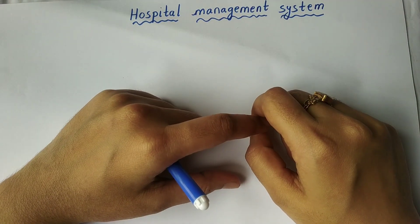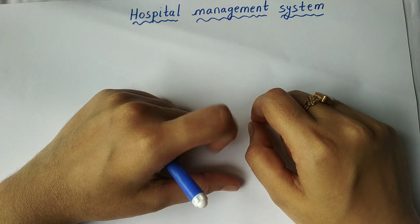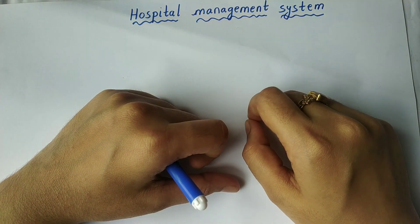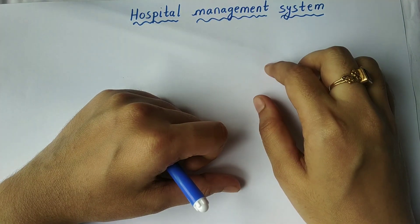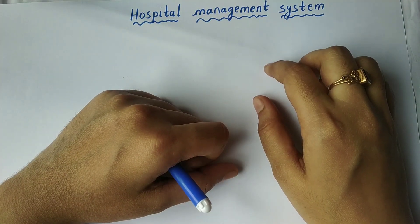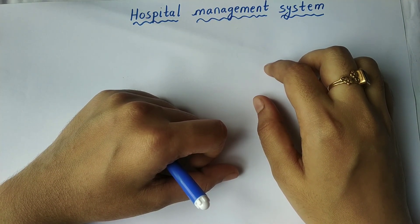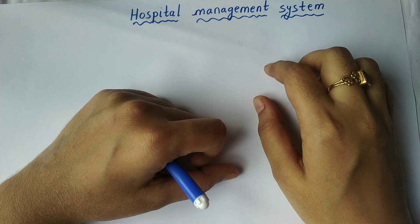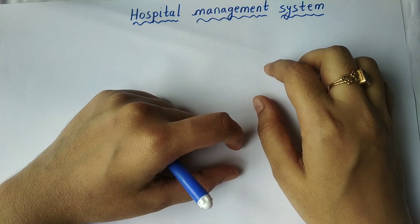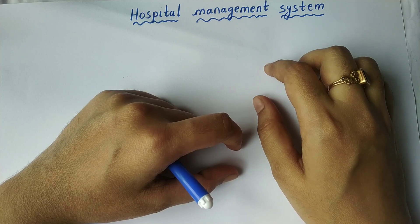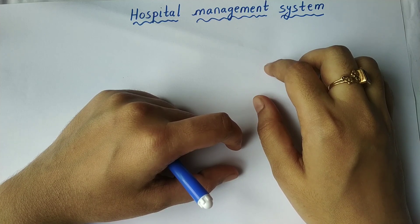In this video, let us learn to draw the ER diagram for a hospital management system. The first step is to choose the entities. Entity means an object with physical existence or conceptual existence.